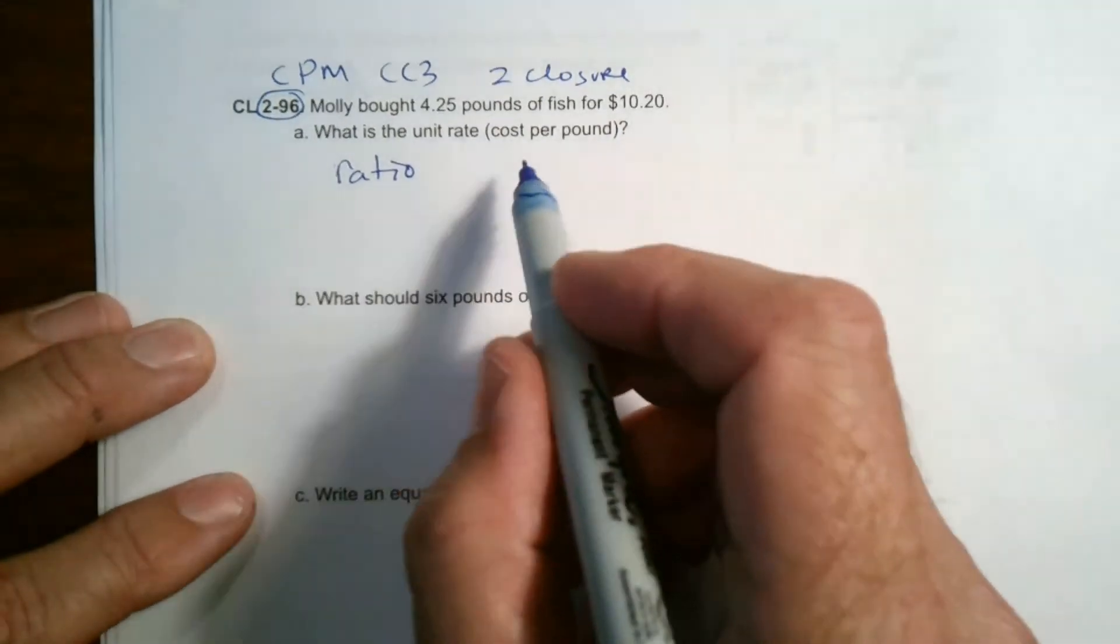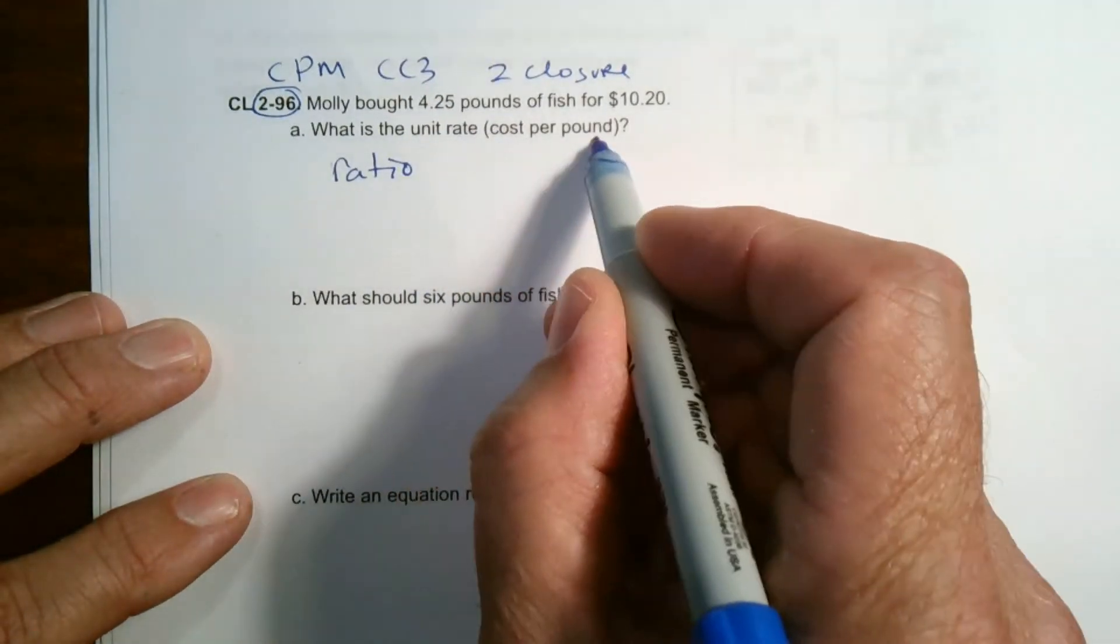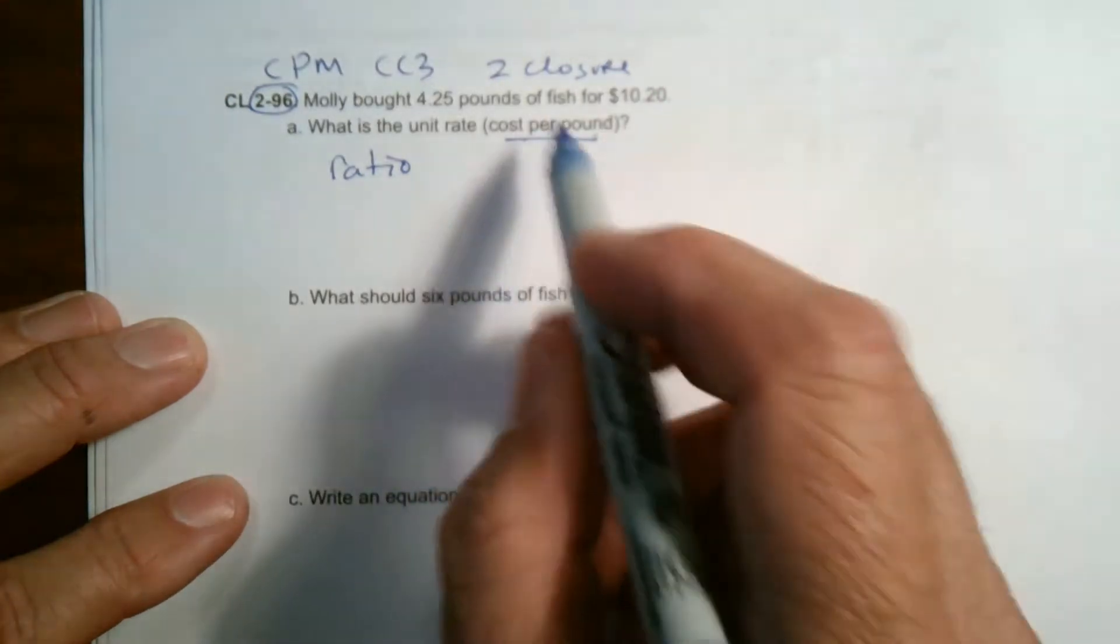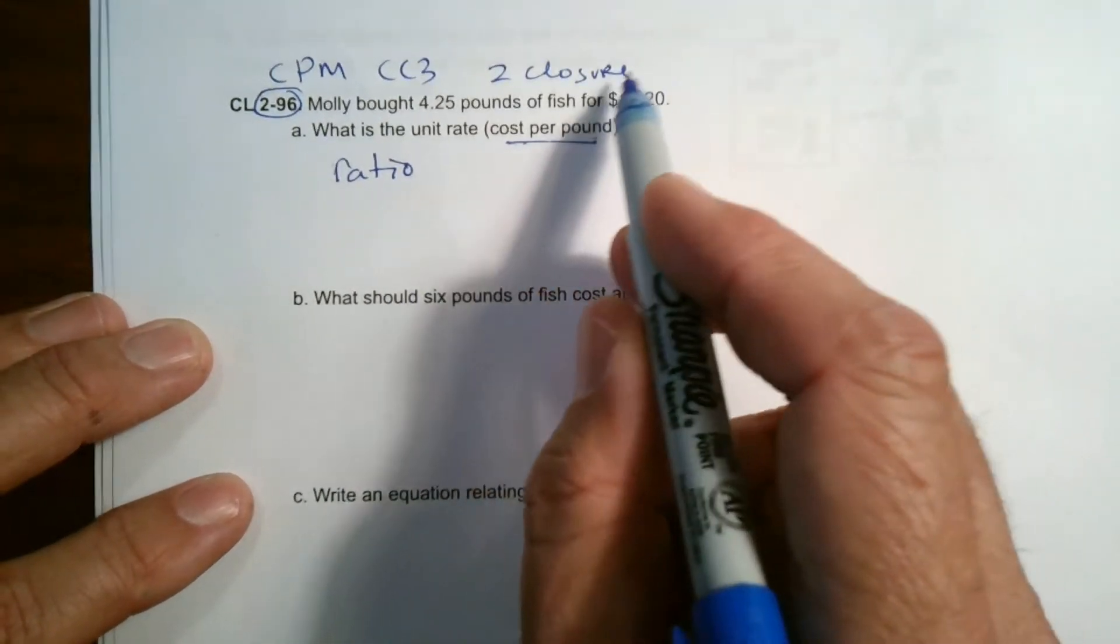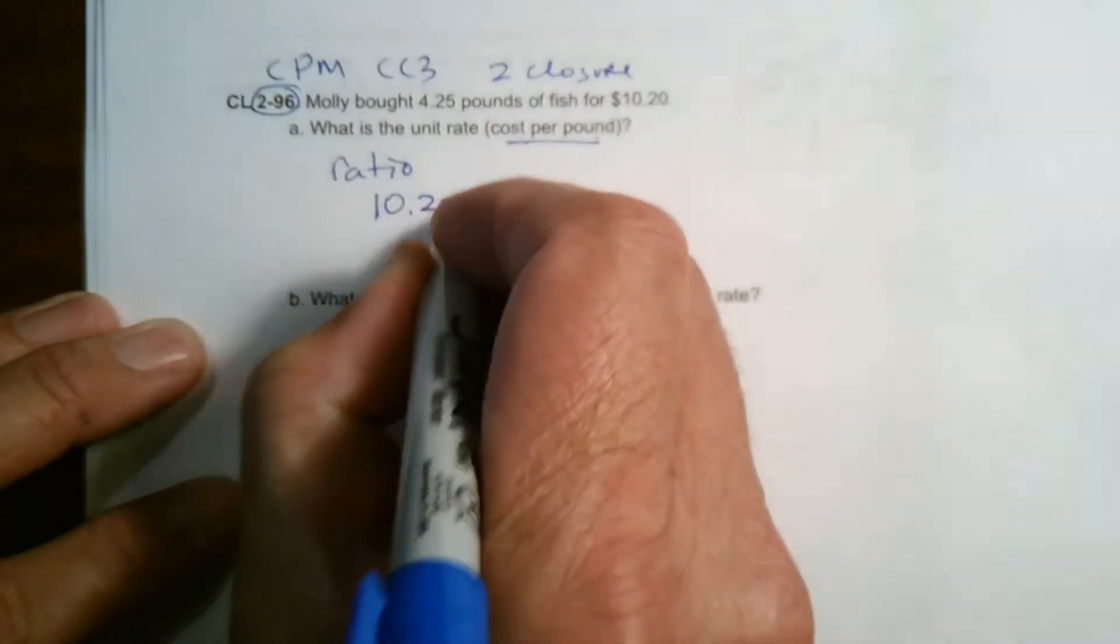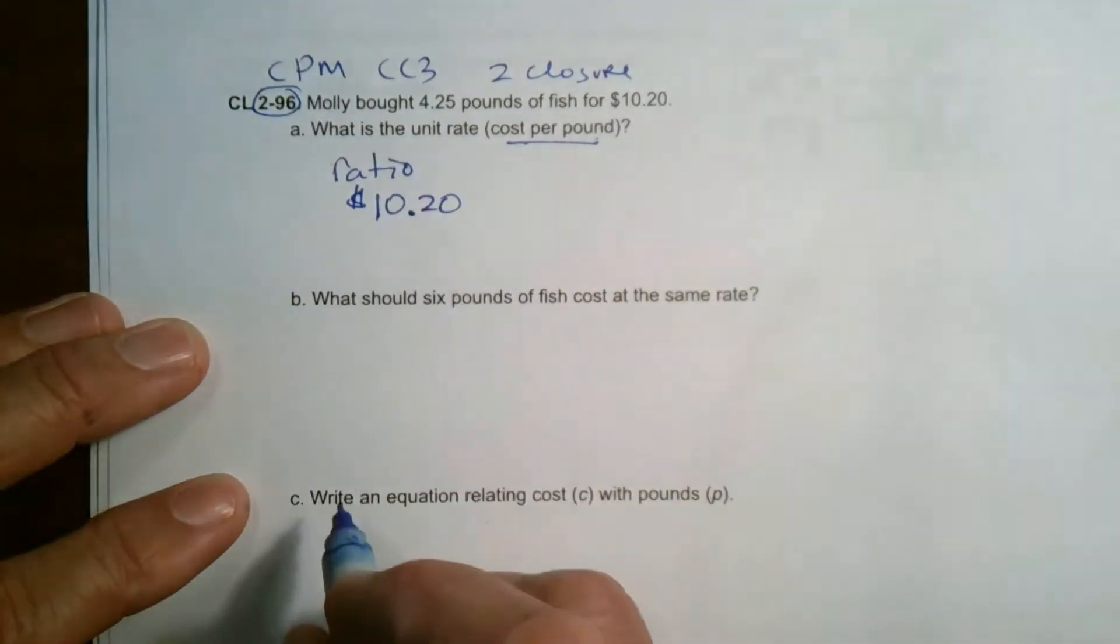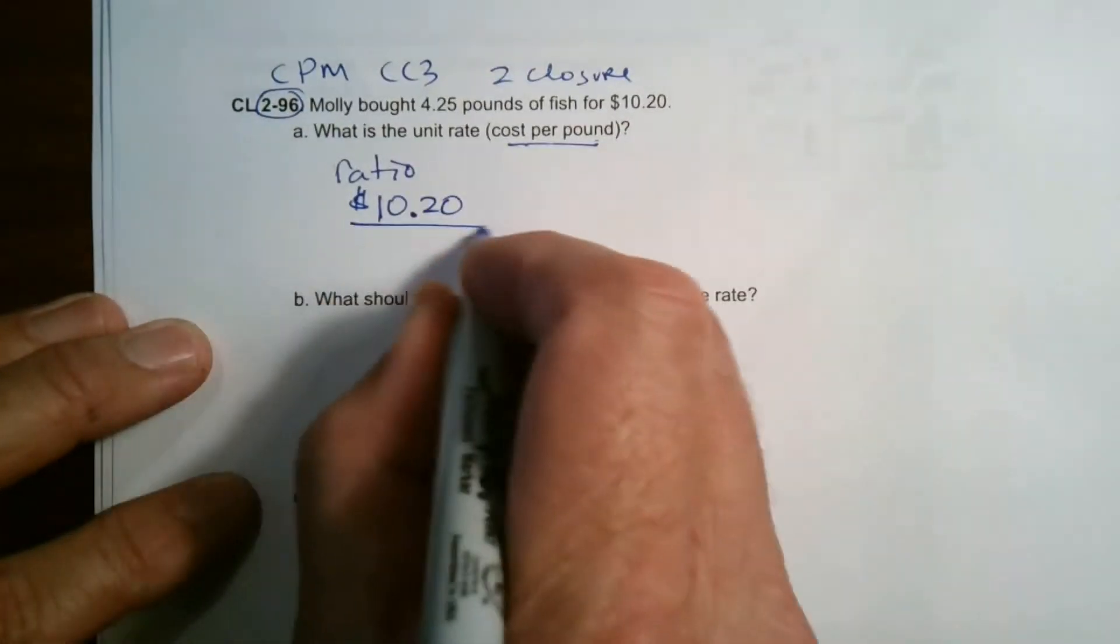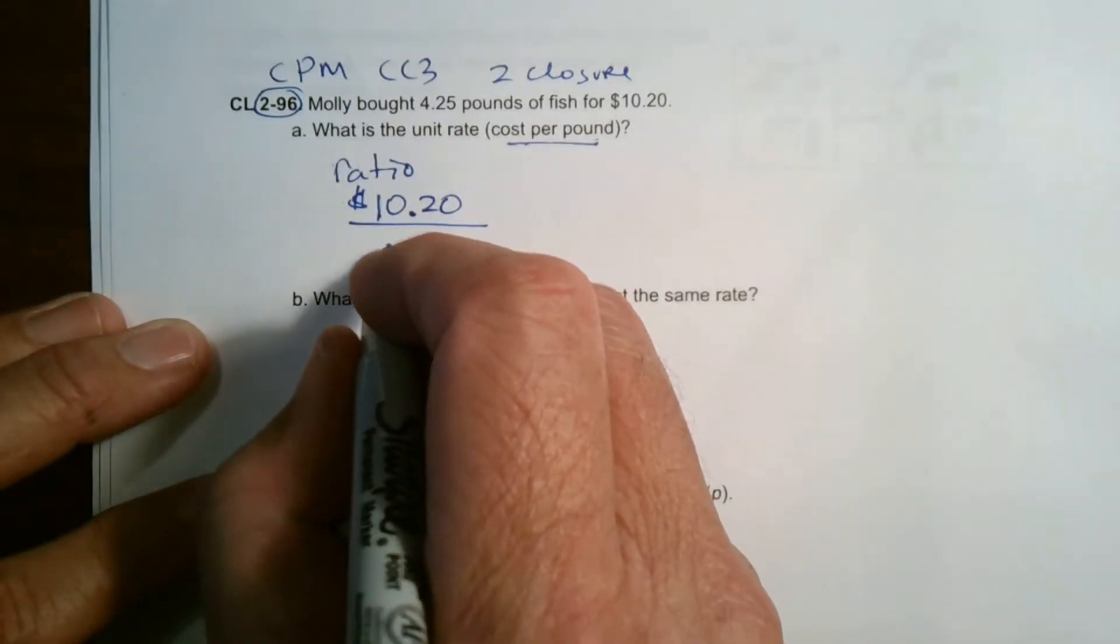So a little hint though, I'm going to look at the unit rate they want me to do. The unit rate they want me to do is cost per pound. So my ratio, I'm going to put the cost that I have on the top of the fraction, cost, and then pounds of fish on the bottom.